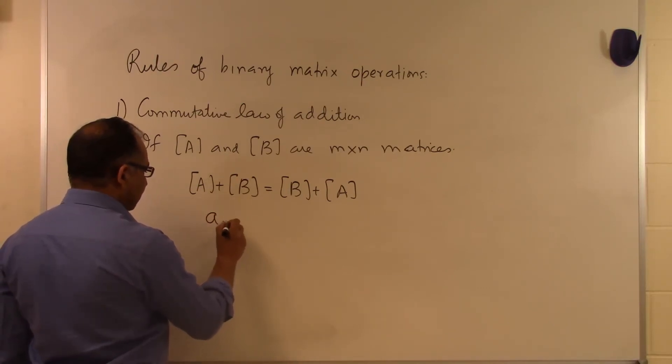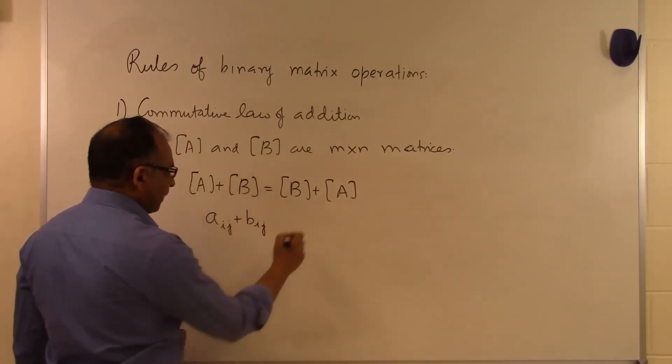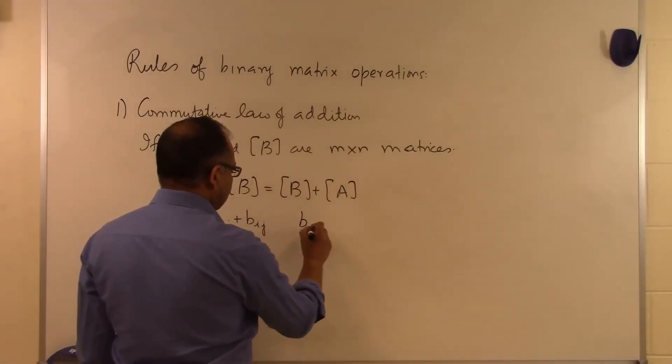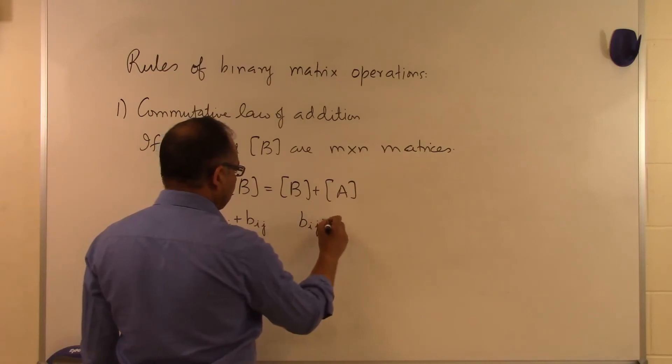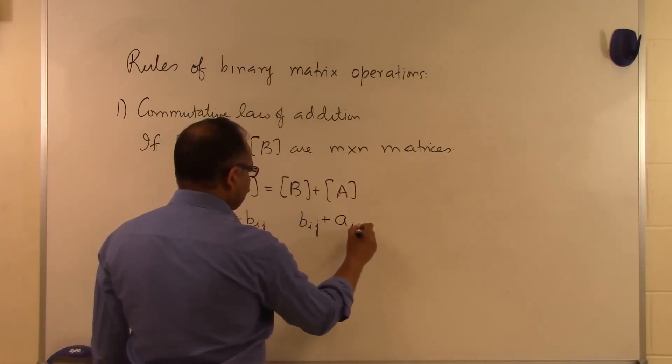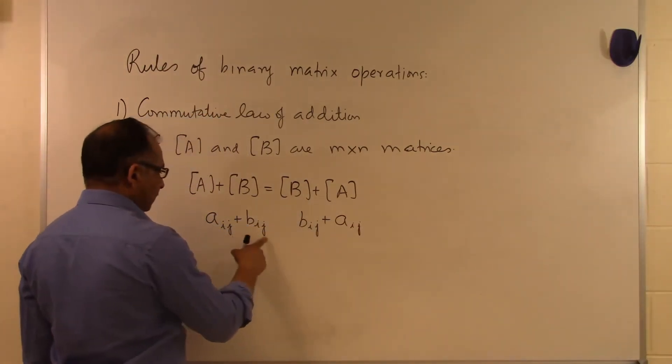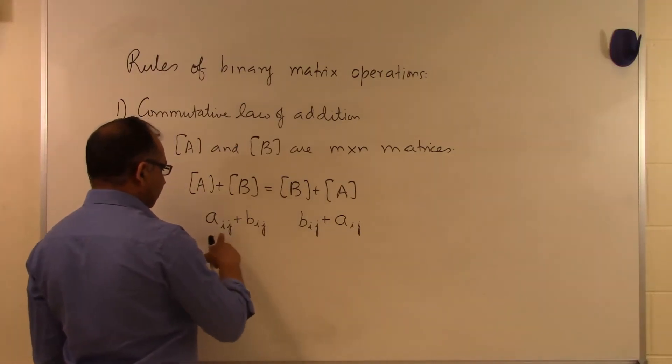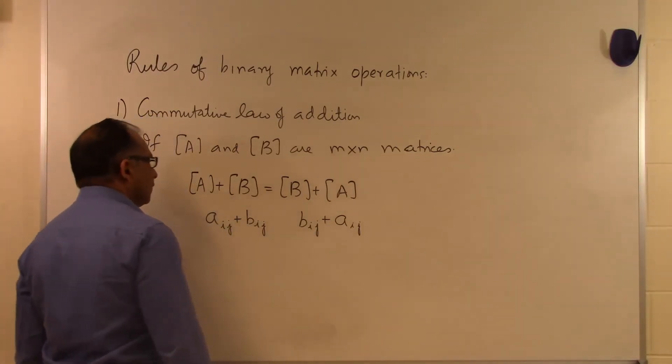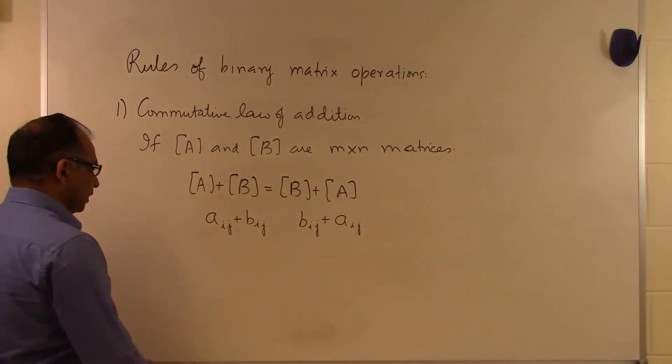Here, if I was going to calculate this, it will be the i,j-th element of B and the i,j-th element of A. And you can very well see that they will be the same number, whether I add this number to this number or whether I add this number to this number. And that's what the commutative law of addition is telling us.